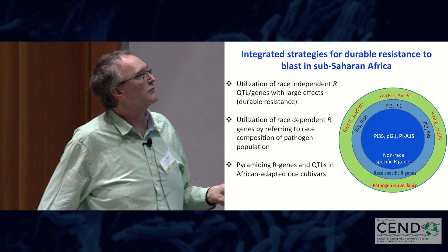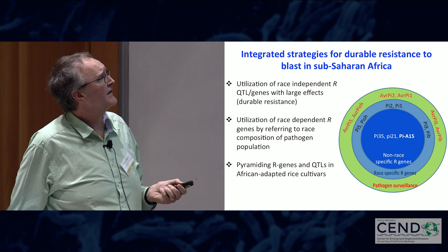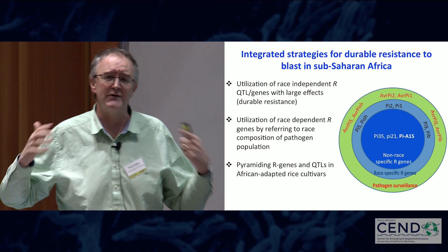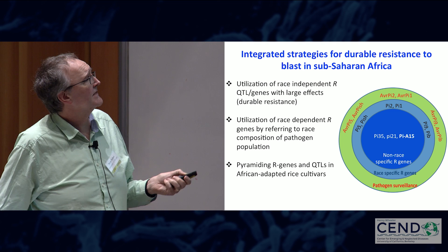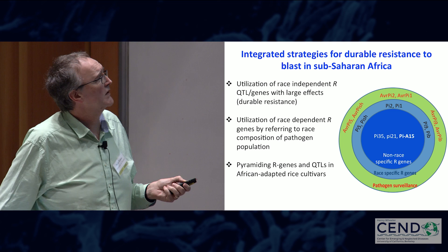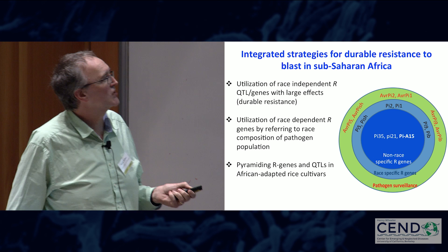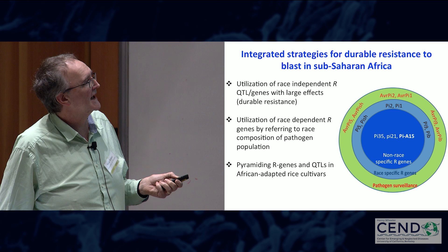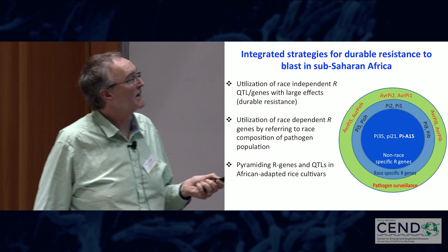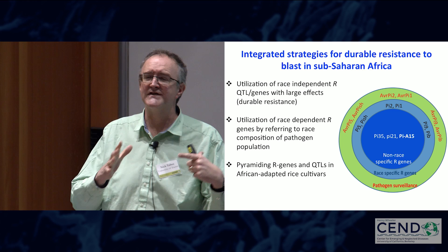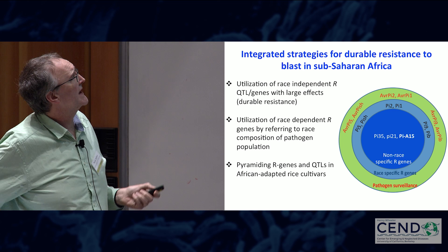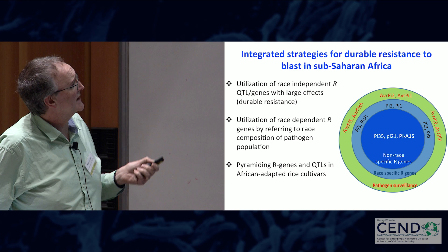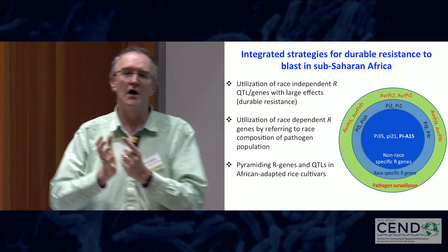However, none of those R genes singly would be very durable, because the fungus is able to overcome disease resistance so easily by mutation of these effector AVR genes. So we have an ongoing pathogen surveillance process and we're deploying those race-specific resistance genes in combination with non-race-specific R genes — QTLs for rice blast tolerance, a recessive susceptibility resistance gene, a dominant susceptibility factor working by a different mechanism — trying to put together a stack of three to four dominant R genes combined with QTLs and a recessive resistance gene.